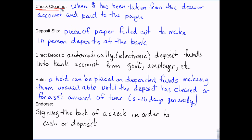Deposit slips: you used to have to use a deposit slip at the ATM, but now you don't really have to do that anymore, and even some banks don't require them if you go inside — but some banks do. A deposit slip is a piece of paper that is filled out and used to make in-person deposits at the bank. They have the date, your account number, your name, and the amount of the deposit on it. It helps because when you go to the bank teller, all deposits go into the same drawer, and the deposit slips are used during the reconciliation process.